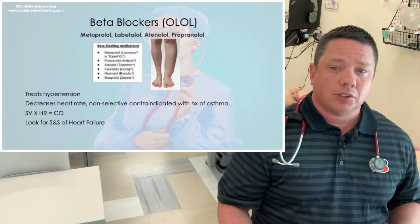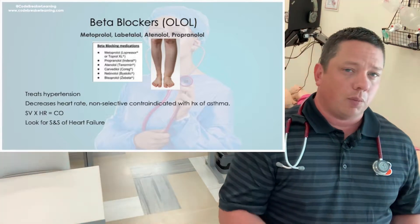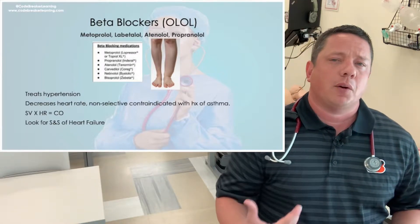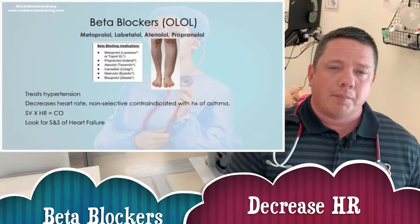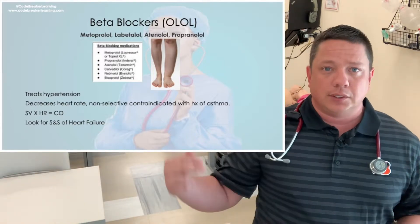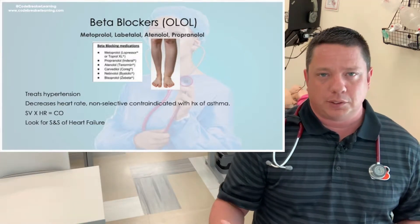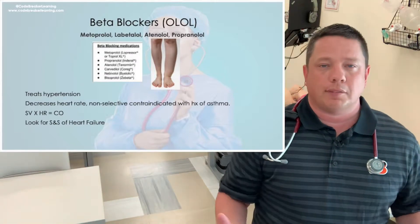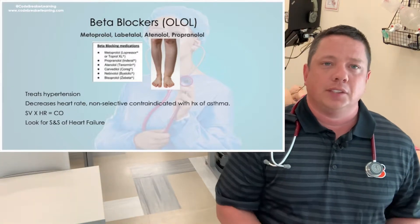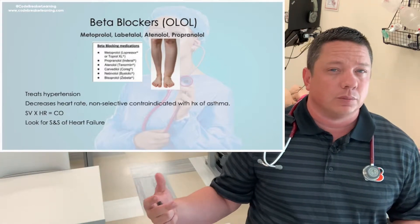These medications can treat hypertension but they work heavily on decreasing your heart rate. With beta blockers you want to remember that they decrease your heart rate. From A&P, stroke volume times heart rate equals cardiac output — if you decrease your heart rate, that decreases your cardiac output, which decreases your blood pressure. However, propranolol specifically, which is non-selective and works on your lungs, can cause bronchospasm, so you don't want to give it to people with a history of asthma. Additionally, since they slow down your heart rate and decrease cardiac output, this mimics heart failure.